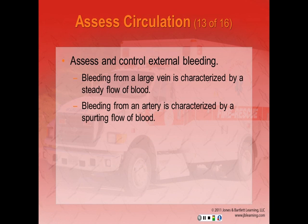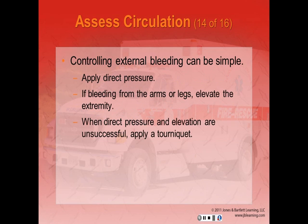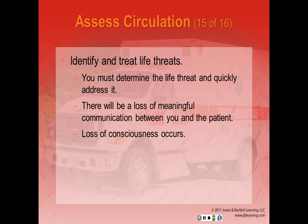Assess and control external bleeding after clearing the airway and stabilizing breathing. Bleeding from a large vein is characterized by a steady flow; bleeding from an artery is characterized by a spurting flow. Run gloved hands from the patient's head to toe, pausing to check if gloves are bloody. If external bleeding is found, first apply direct pressure. If bleeding is on the arms or legs, elevate them. When direct pressure and elevation are not successful, immediately apply a tourniquet.